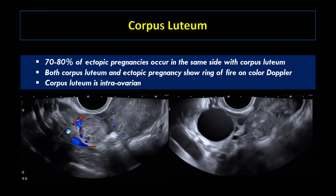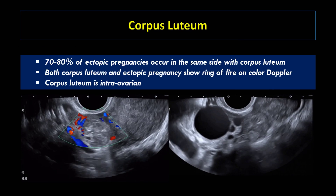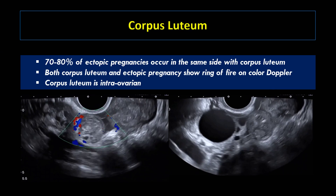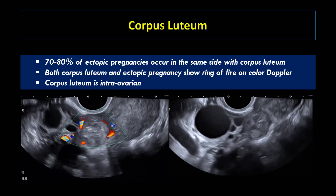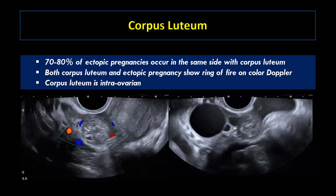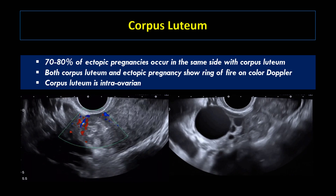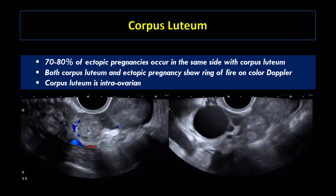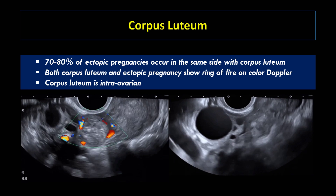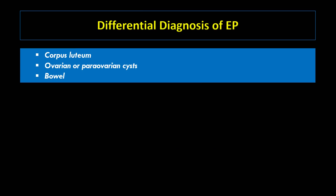This is another case of corpus luteum. About 70 to 80% of ectopic pregnancies occur on the same side as the corpus luteum. Both corpus luteum and ectopic pregnancy show a ring of fire sign on color Doppler, so this sign does not favor one over another. Corpus luteum is intra-ovarian and ectopic pregnancy is extra-ovarian, except in rare ovarian ectopic pregnancy — this may help differentiate the two. The differential diagnosis of ectopic pregnancy includes corpus luteum, ovarian or para-ovarian cysts, and a bowel loop mimicking an adnexal mass. The gestational sac has more echogenic and thicker walls than corpus luteum.